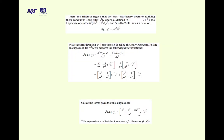Marr-Hildreth argued that the most satisfactory operator fulfills the condition ∇²G, where ∇² is the Laplacian operator (∂²/∂x² + ∂²/∂y²) and G is the 2D Gaussian filter. Therefore, using a Gaussian filter with second-order derivative with standard deviation σ (the space constant), we perform the following operation and finally obtain the Laplacian of Gaussian (LoG) operator.